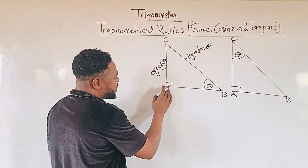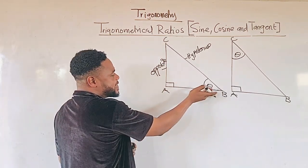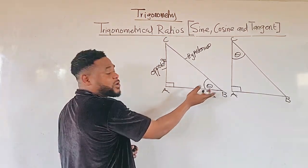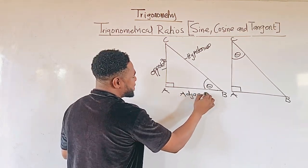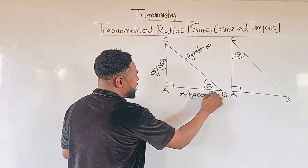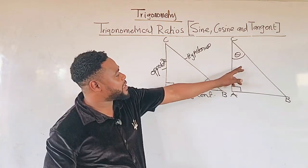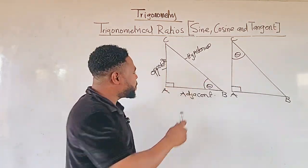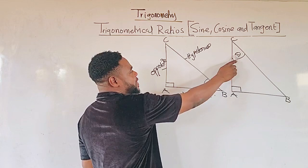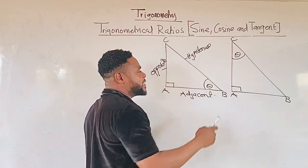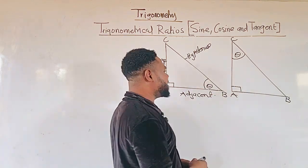Then we have line AB, which is beneath this angle, or is under the angle, and we call it adjacent. Now viewers, let us also look at this triangle. We move the angle from the base here to the top here, so automatically the naming will change. Let's see how it can be done.